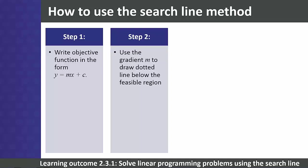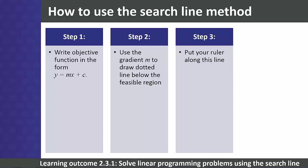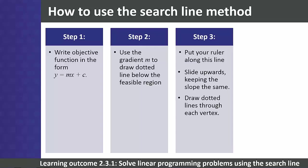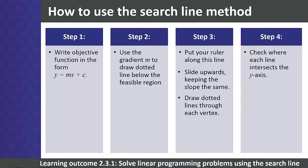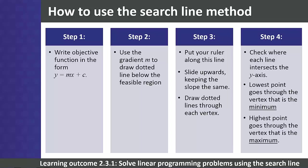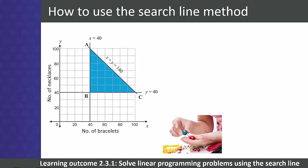Step 2: use the gradient of the objective function to draw a dotted line with this gradient below the feasible region to intersect both axes. Step 3: put your ruler along this line and slide it up over the feasible region — at each vertex draw another parallel dotted line through the vertex. Step 4: check where each line intersects the y-axis — the lowest intersection is the minimum and the highest is the maximum.